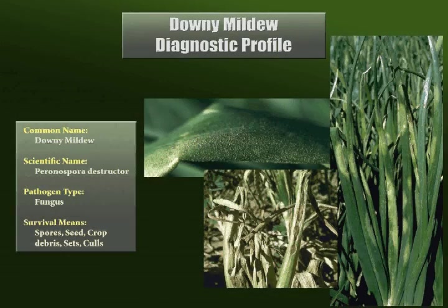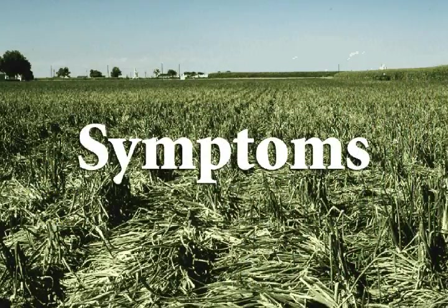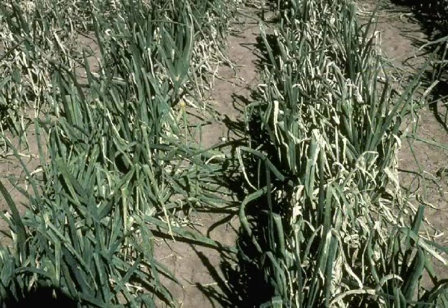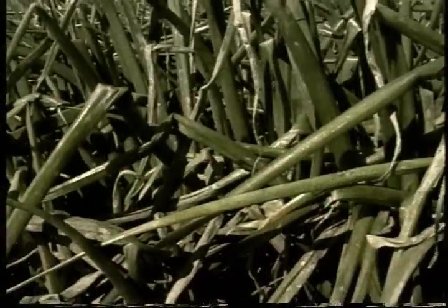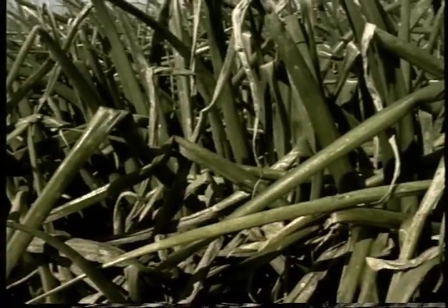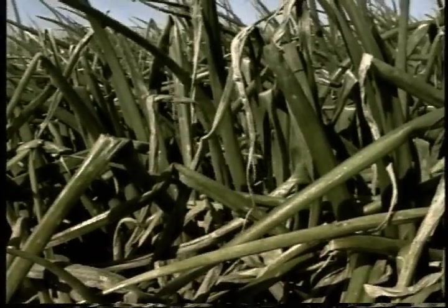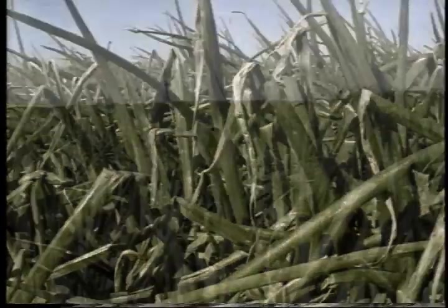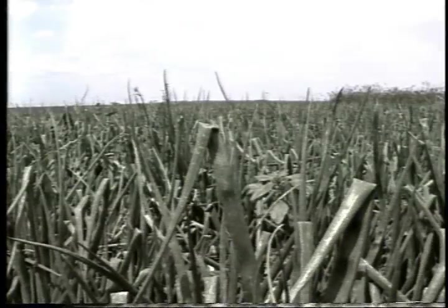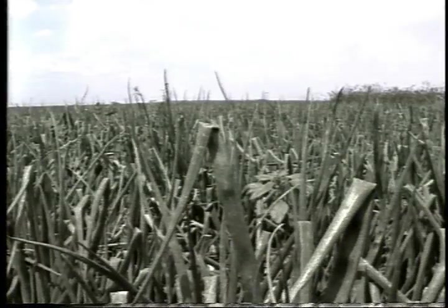Onion Downy Mildew is caused by the fungal pathogen Peronospora destructor. Initial Downy Mildew infection may be observed during early morning hours or after prolonged periods of cool, cloudy weather.